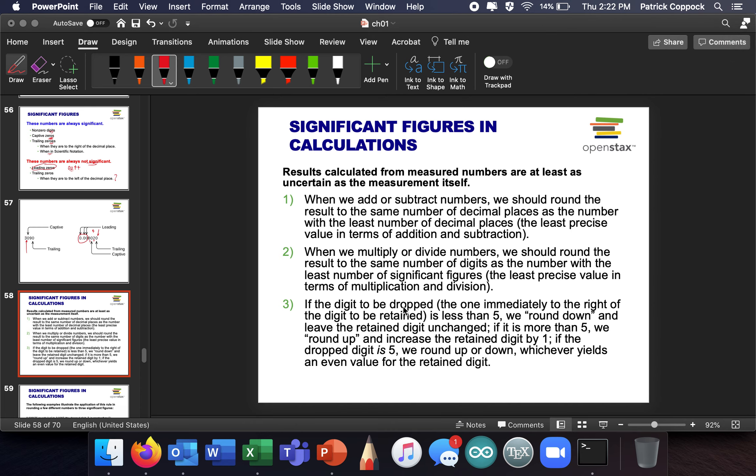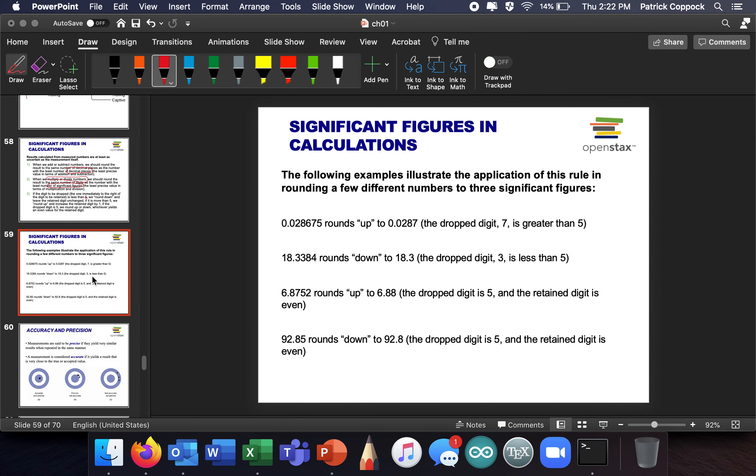So results calculated for measured numbers are at least uncertain as the measurement itself. When you add or subtract numbers, you need to round the result to the same number of the decimal place with the least number of decimal places. When we multiply or divide, we round to the same number of digits with the least number of sig digs. And if you drop a digit, then if it's less than 5, we round down. If it's greater than 5, we round up. So we have lots of practice coming up on this. This is just an introduction.